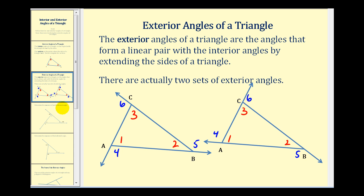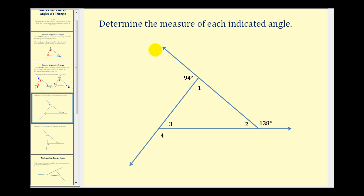Let's take a look at a couple of example problems where we want to determine the measure of the indicated angles. There are a couple of things to remember: first, the sum of the interior angles of a triangle will always be 180 degrees, and second, the exterior angles form a linear pair with the interior angles.